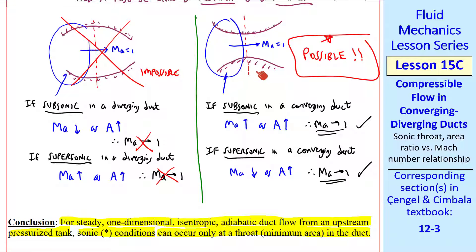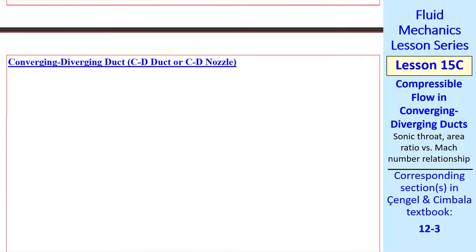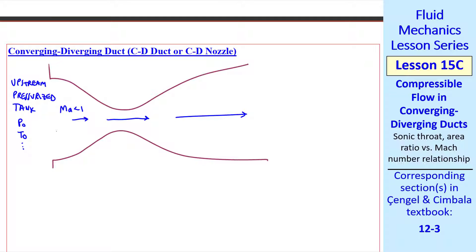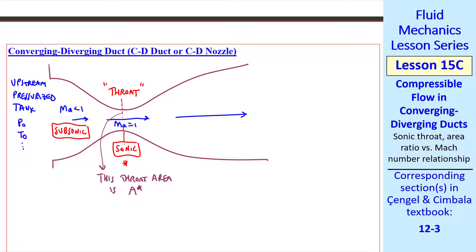As in this sketch, you cannot have Mach number 1 in a flow like this. Now let's discuss what's known as a converging-diverging duct, or a CD duct, or a CD nozzle. Suppose there's some large upstream pressurized tank with properties P-naught, T-naught, etc. The flow accelerates through this converging-diverging duct. To the left of the minimum area, Mach number is less than 1 — the flow in this region is subsonic. Right at the minimum area, which we call the throat, the flow is sonic, or critical, denoted by an asterisk, and this throat area is A-star.